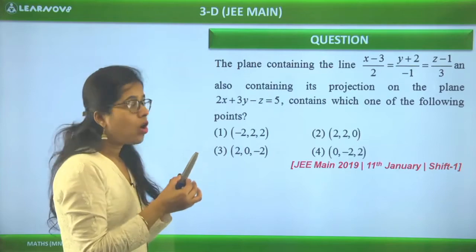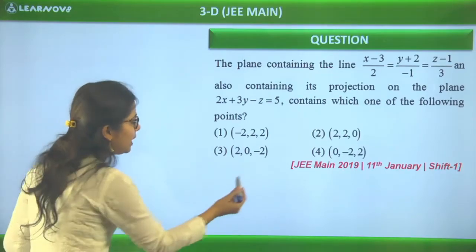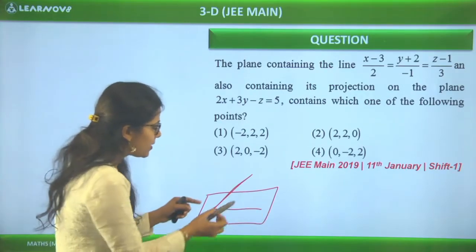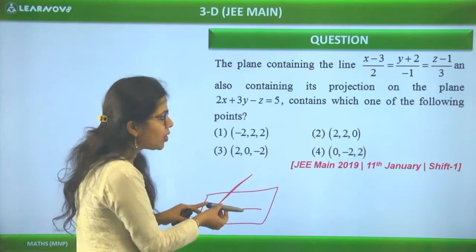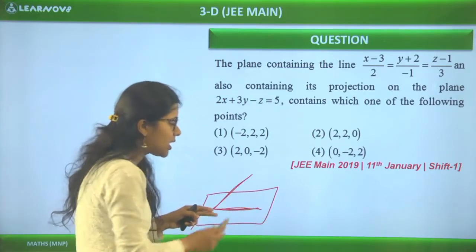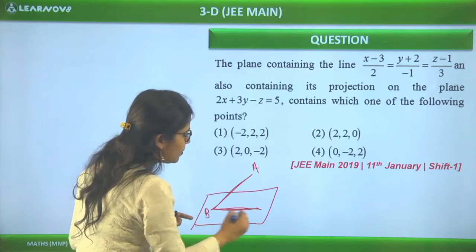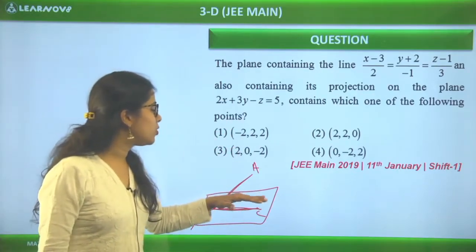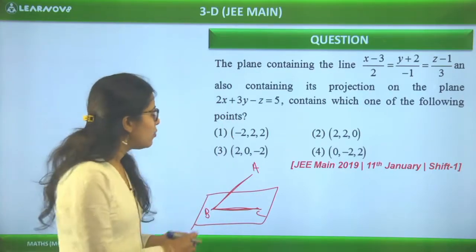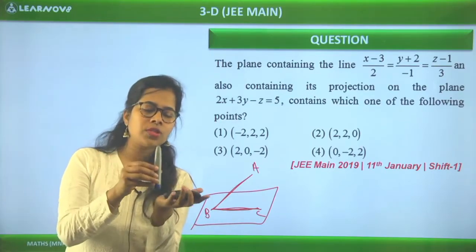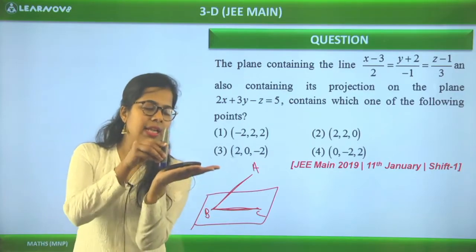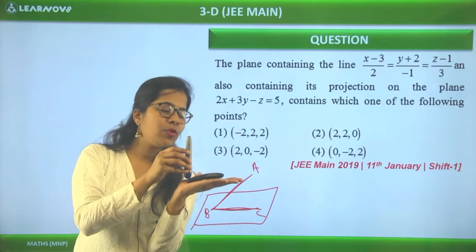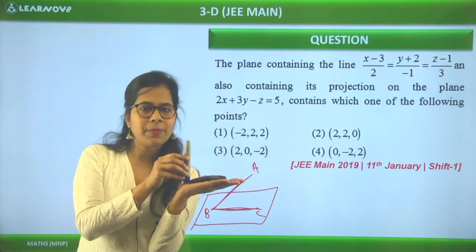Let me explain the concept. There's a line (call it AB) and a plane. When you project AB onto the plane, you get a projected line (call it BC). We need a plane that contains both AB and BC. Geometrically, the plane containing AB and its projection on another plane will be perpendicular to that other plane. So the required plane is perpendicular to the given plane.